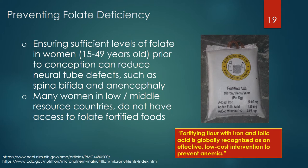Ensuring sufficient levels of folate in women prior to conception can reduce neural tube defects such as spina bifida and anencephaly. Providing folic acid supplements to women 15 to 49 years old and fortifying foods such as wheat flour with folic acid reduces the incidence of neural tube birth defects, neonatal deaths, and some forms of anemia. The World Health Organization recommends iron and folic acid supplements. Unfortunately, many populations, particularly those in low and middle resource settings, do not have access to fortified foods or vitamin supplements containing folic acid.